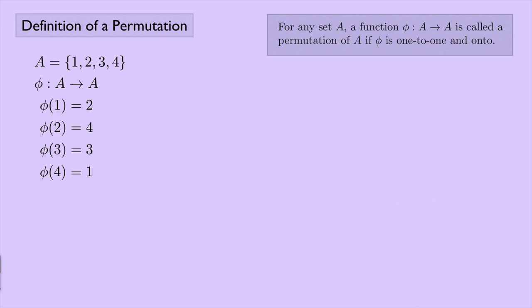So let's look at that example again. We have the set A being 1, 2, 3, and 4. And then we have the function phi going from A to itself. And we had phi of 1 equals 2, phi of 2 equals 4, phi of 3 equals 3, and phi of 4 equals 1. So this gets to be kind of complicated. It's a little cumbersome to have to write this out every single time. So fortunately there's a little shorthand that we can use to denote this permutation. Here's how it works.